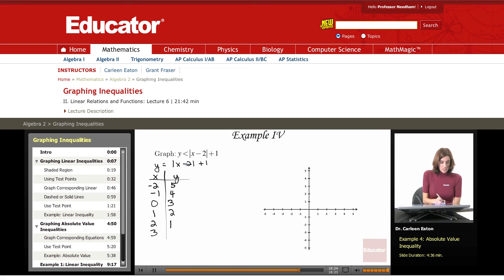3 minus 2 is 1, the absolute value is 1, plus 1 is 2. 4 minus 2 is 2, the absolute value is 2, plus 1 is 3.